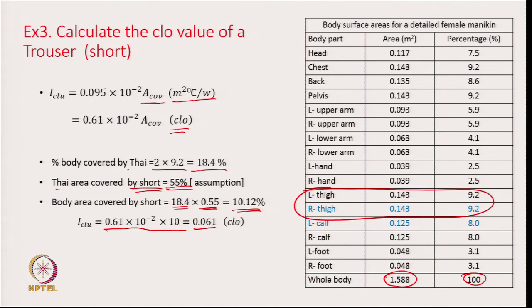The clo value will vary depending on the total area covered — a longer trouser covering the entire thigh gives a higher clo value. What matters is what percentage of the total body area is covered by the garment.